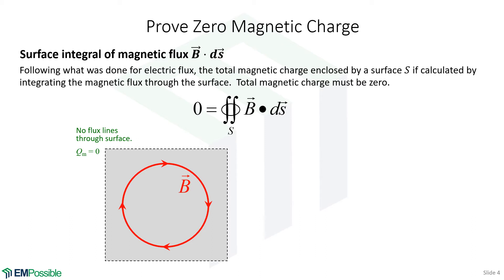But what if that Gaussian surface is cutting through that loop? Let's look at that case. Well, the flux is zero everywhere except two points. However, if we look at the magnetic flux coming in and the magnetic flux going out, it turns out they're of opposite sign, otherwise equal. Same magnitude, but opposite sign. And they end up canceling.